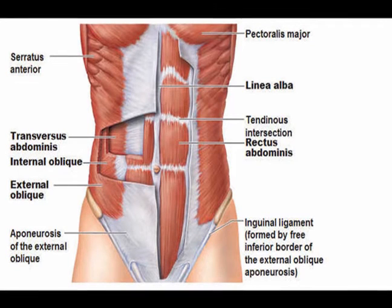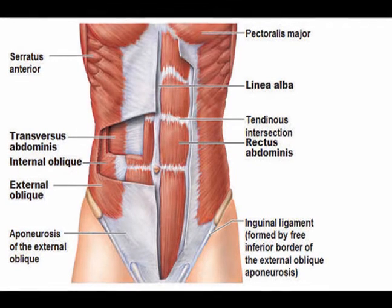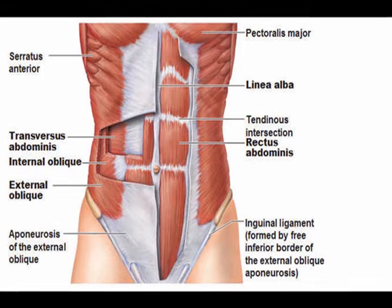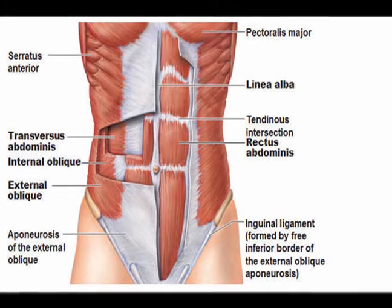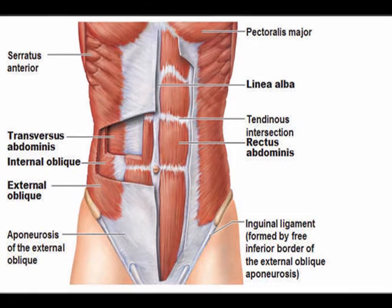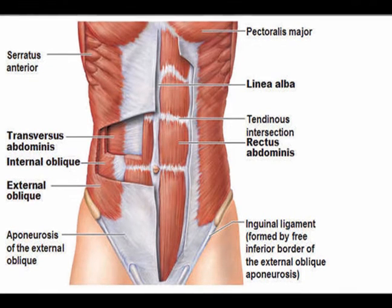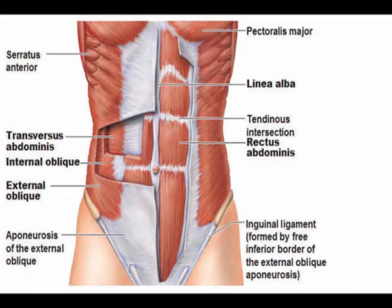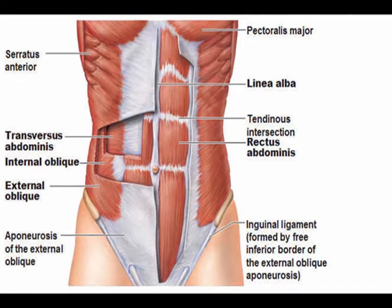The muscles that make up the core include the transverse abdominis, which is the deepest core muscle, the internal obliques, the external obliques, and the rectus abdominis — we all know those as the six-pack muscles.